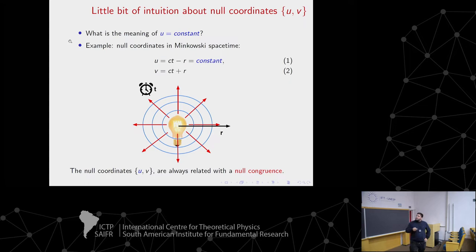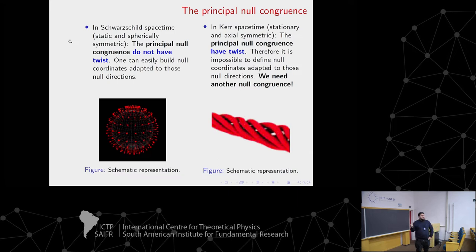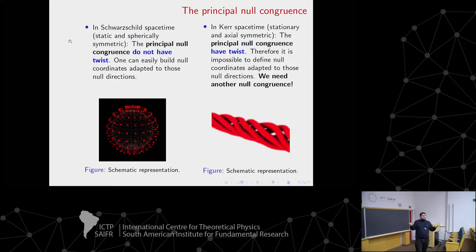What about more complicated cases, for example Schwarzschild? The null coordinates in Schwarzschild are well known - they are the Eddington-Finkelstein coordinates. The first question is: which is the null congruence related to the Eddington-Finkelstein coordinates? That null congruence is the well-known principal null congruence. There is a geometrical definition for this congruence. We can define it for Schwarzschild but also for Kerr. In Schwarzschild, this congruence has null rays that go radially outgoing or ingoing, giving it nice properties.